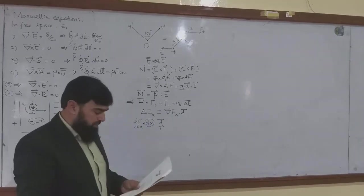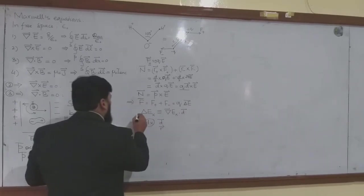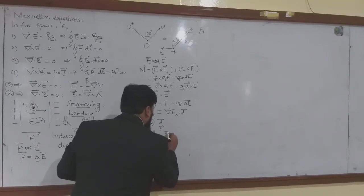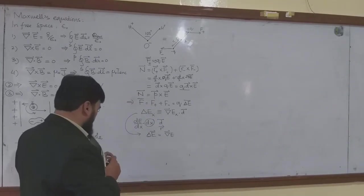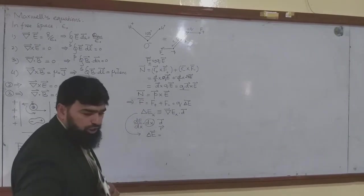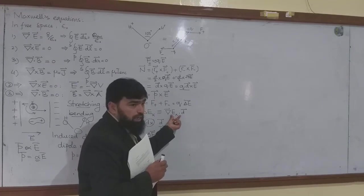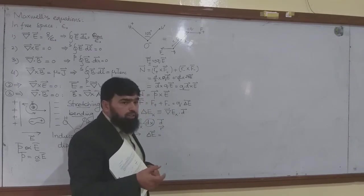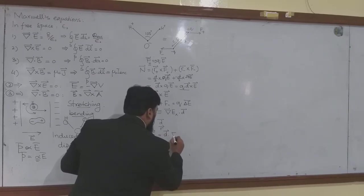More importantly, in vector form I can write delta E is equal to the gradient of E, written as del E. One thing we should be careful of: the gradient here is the gradient of a scalar. Now I want to write E as a vector, so I cannot write the gradient of a vector. But I know that the dot product is commutative, so I can write D dot and then gradient of E_x.